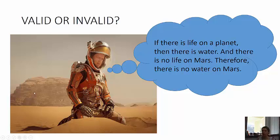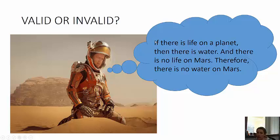Using the counter-example method: if there is life on a planet, then there is water — that's true. There is no life on Mars — true. But the conclusion is false, because it turns out there is water on Mars, or there was water on Mars. So premises one and two are true but the conclusion is false. There could be water on a planet with no life — you don't just need water to have life; there are other necessary conditions for life on a planet.